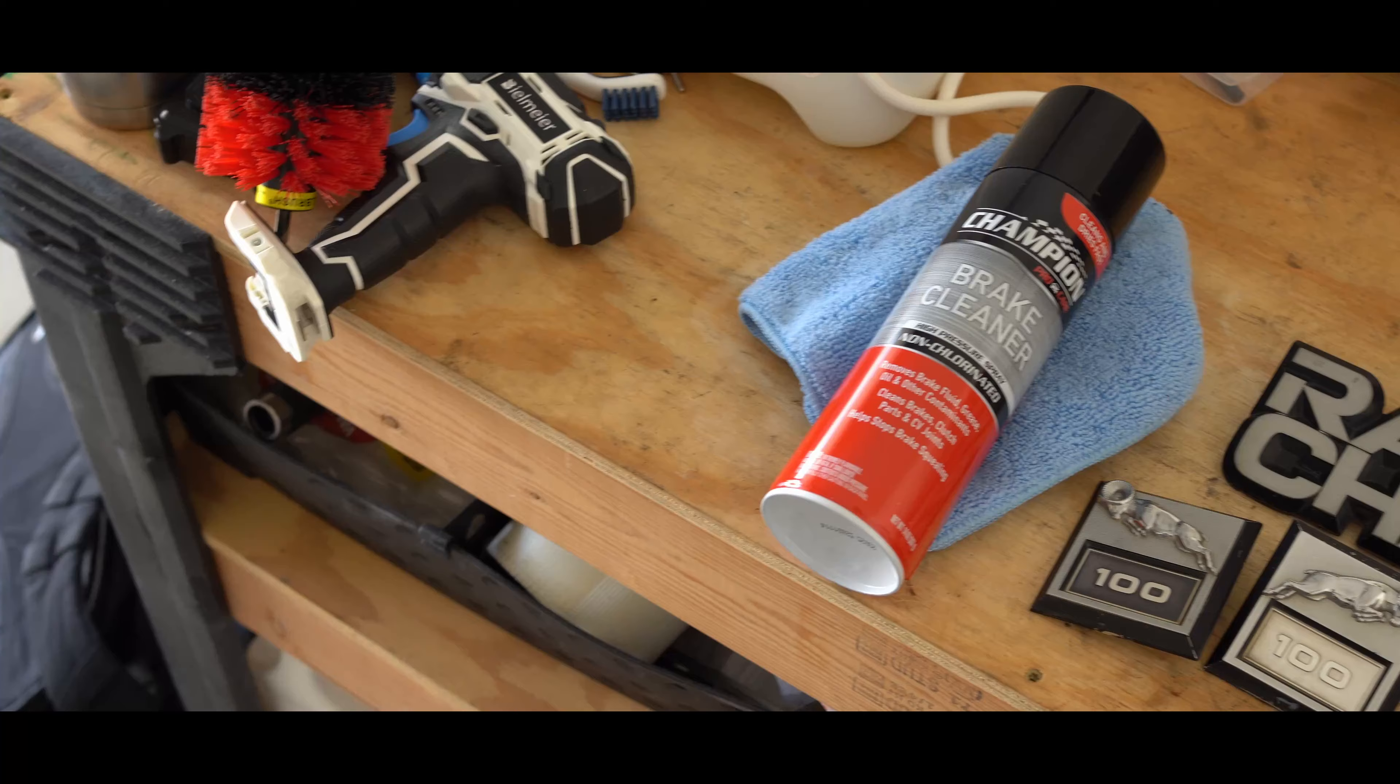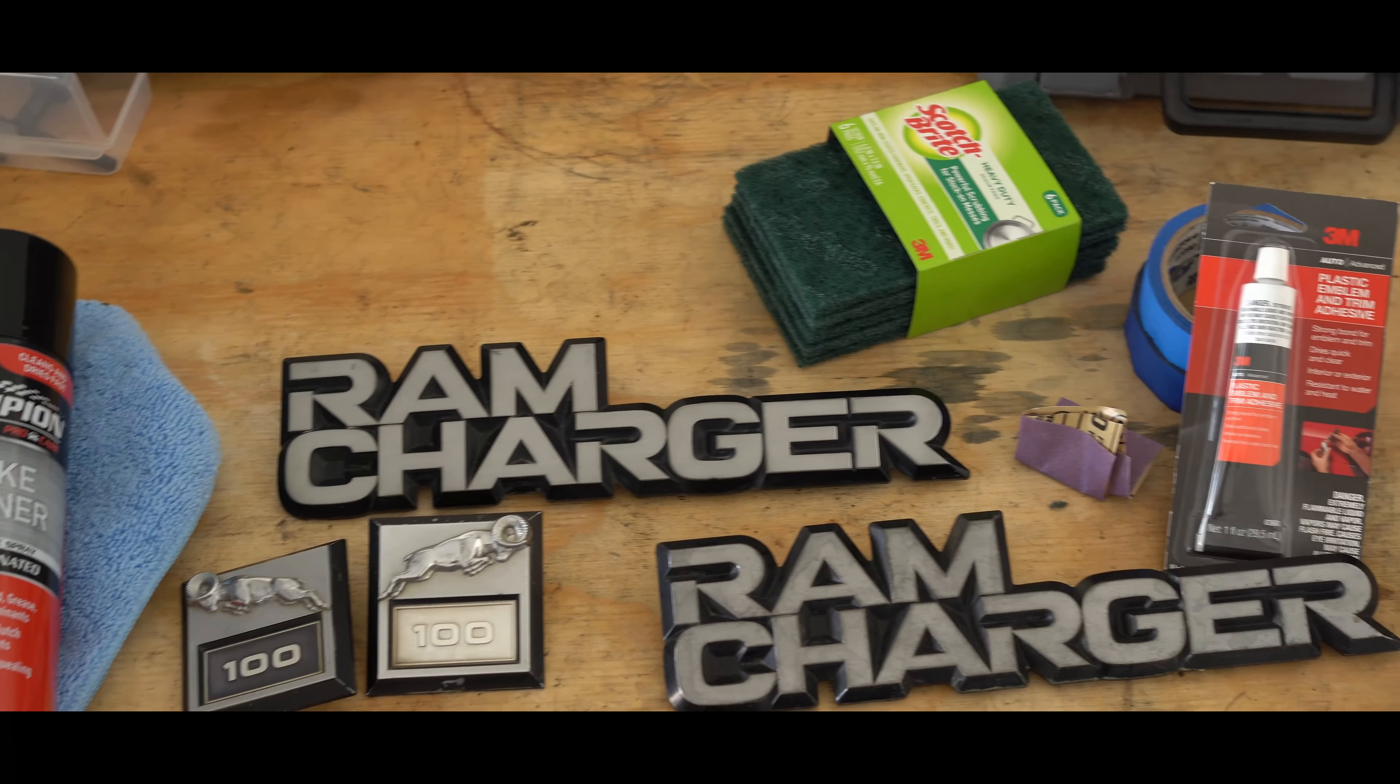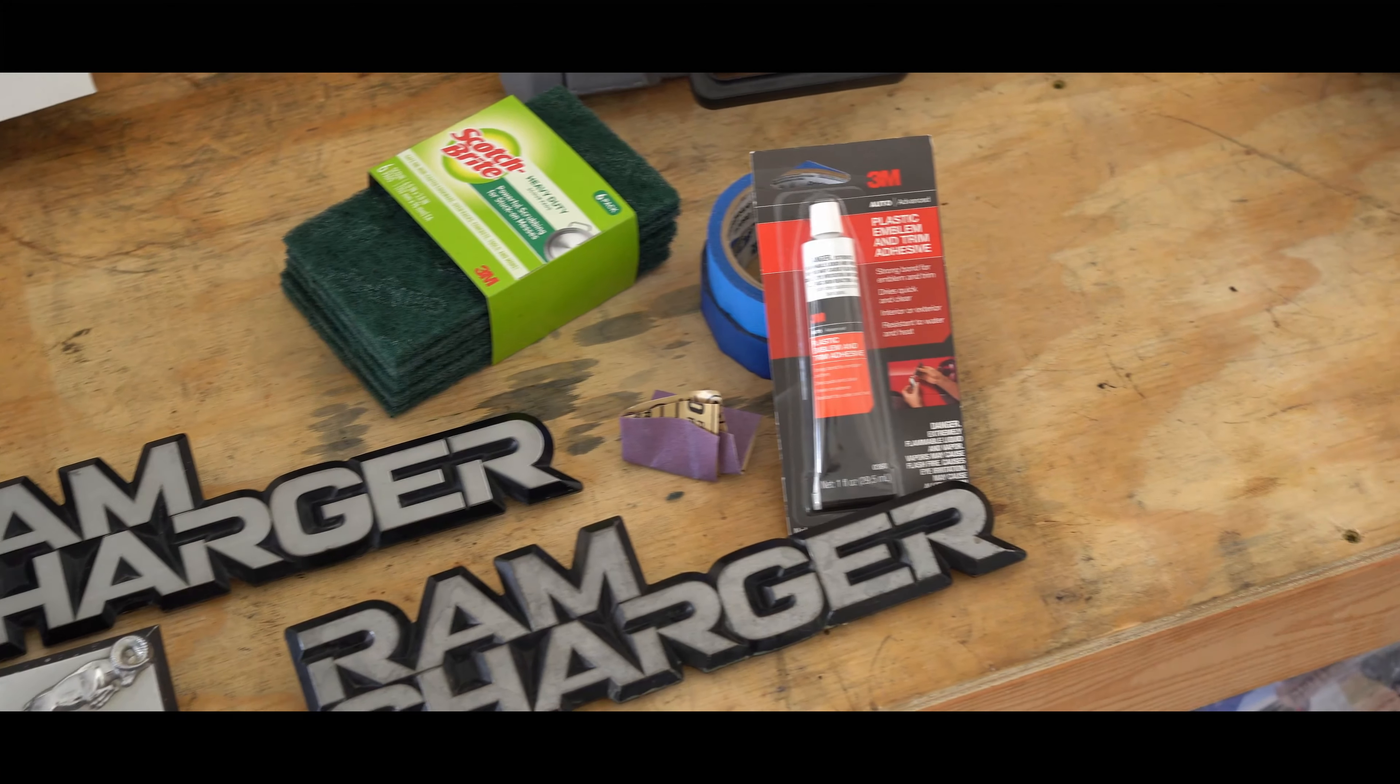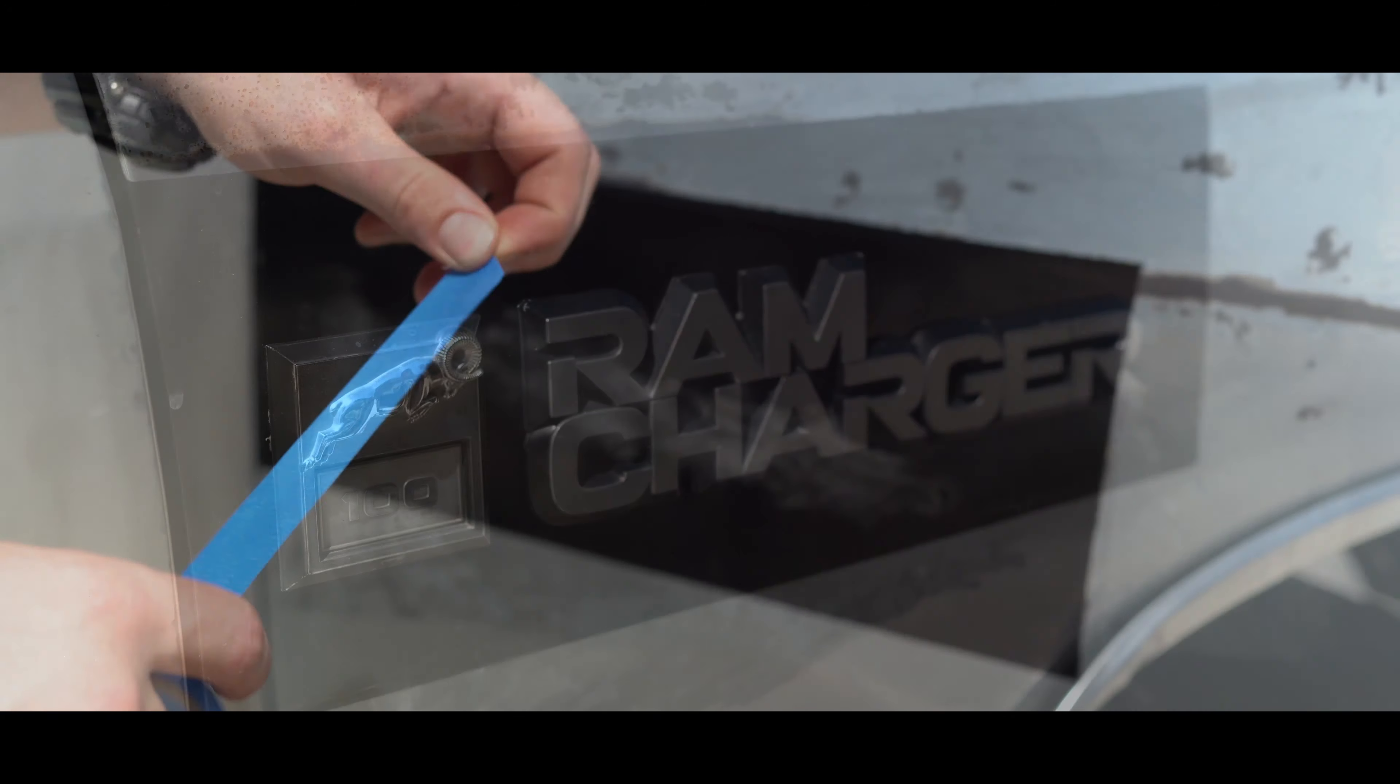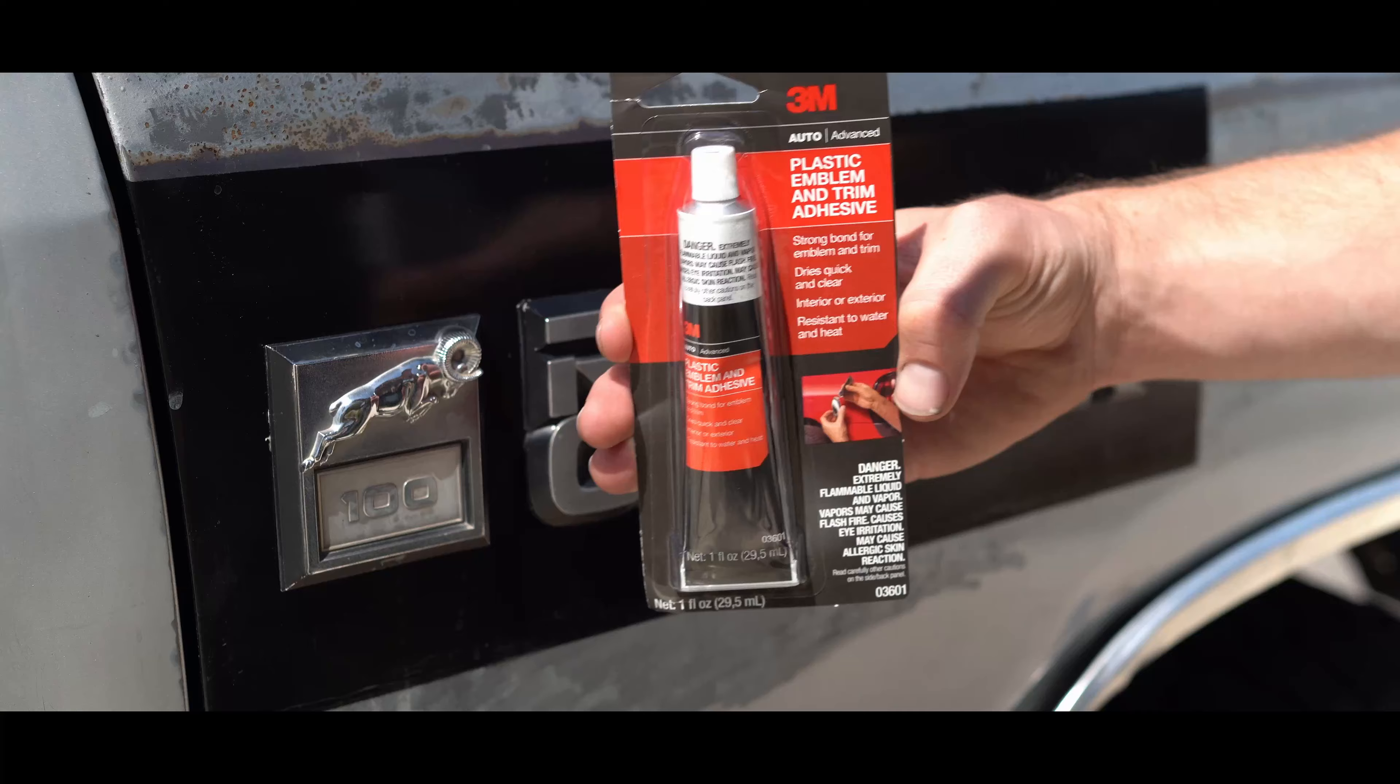Some of the things you'll be needing are your trim or badges, some sandpaper like 150 to 220 grit or green scotch brite, some brake clean paper towels, masking or painter's tape, specifically low tack is what you'll want to get, and then obviously the adhesive or glue you'll be using for your badges or trim.